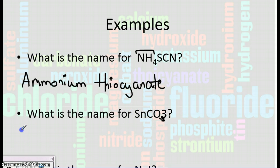We have Sn. Sn is tin. And tin is in the skip column, so we know that he's going to need some sort of Roman numeral. So I'm going to go ahead and put some parentheses to remind myself. Let's go ahead and name the ending, though. So we've got CO3. CO3 is carbonate, so we're going to write carbonate.